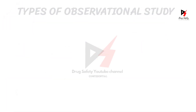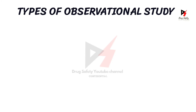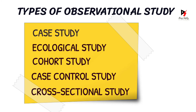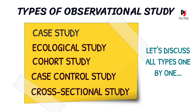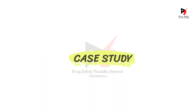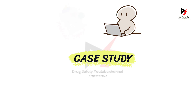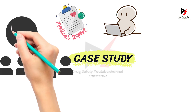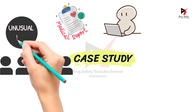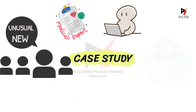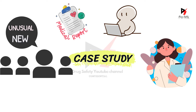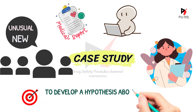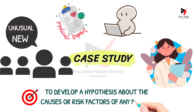Based on the desired end result, observational studies are further divided into five types which are listed on the screen. Under case study, as the name indicates, it is a study of a detailed medical record of one or more patients. The unusual and new cases are studied by a team of qualified researchers, and the goal of such research is to develop a hypothesis about the causes or risk factors of any disease.